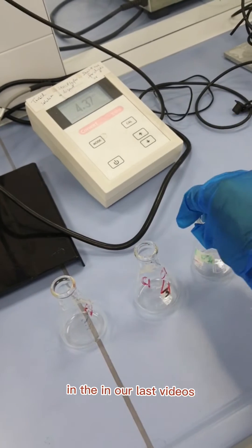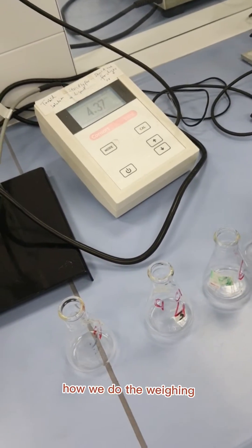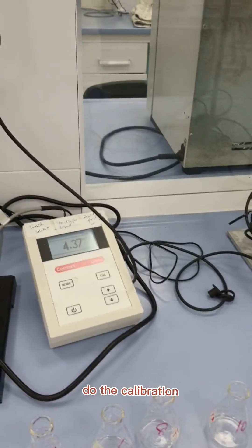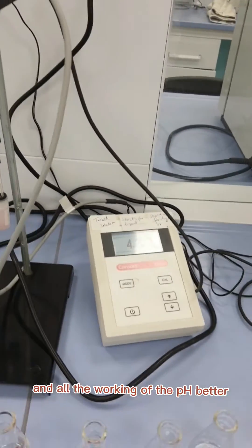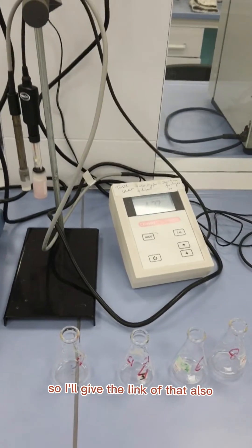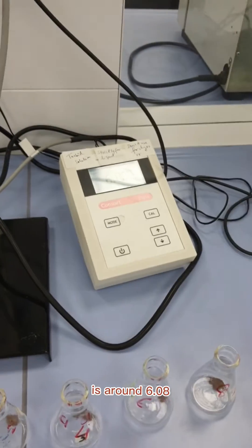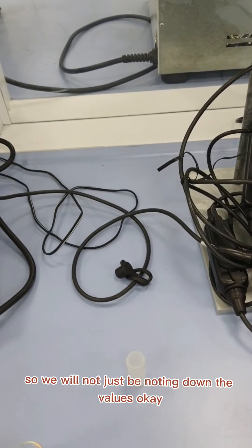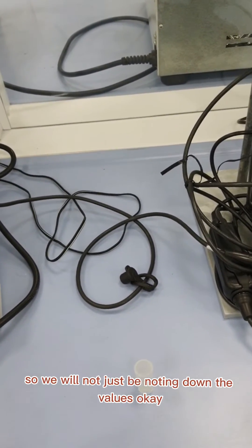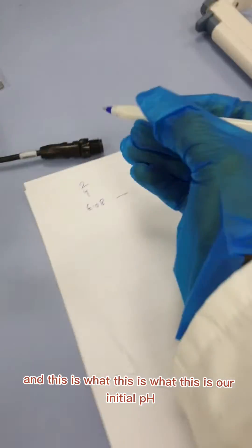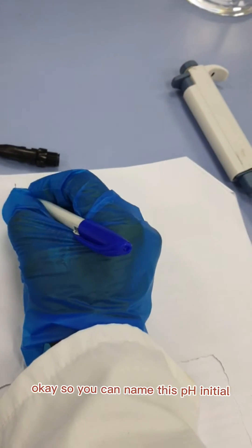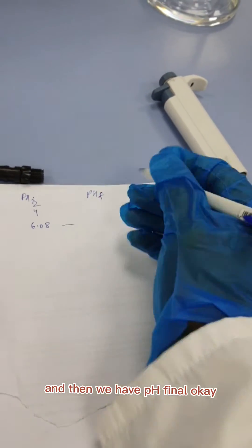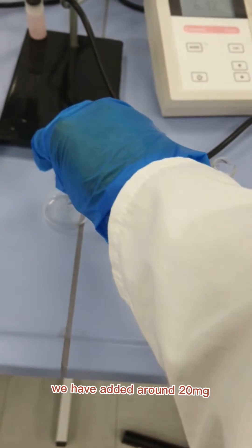You can see here the pH after the solution is around 6.08. So we will note down the values. This is our initial pH. You can name this pH initial and then we have pH final. Already we have added around 20 milligrams in all the cases.